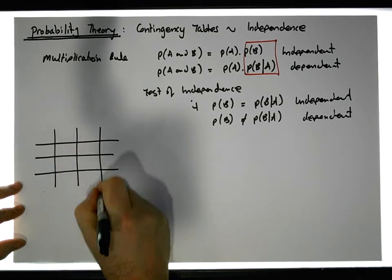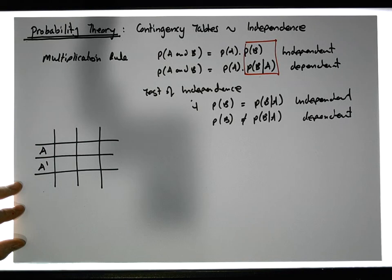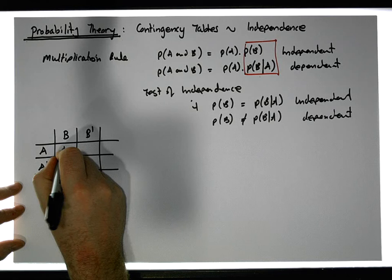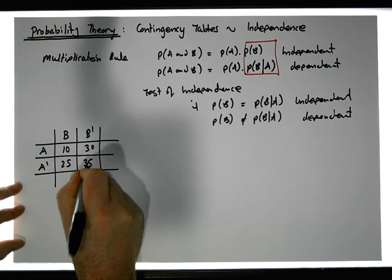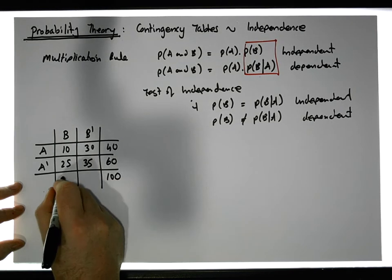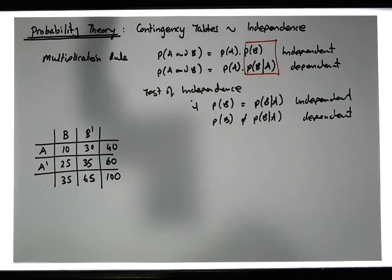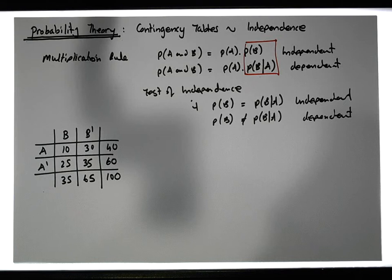Let's say we have product A and 'do not purchase product A', and product B and 'do not purchase product B'. The contingency table has values: 10, 30, 25, and 45, with row and column totals of 40, 60, and 100, and 35 and 65. I took this contingency table from 'Business Statistics' by Berenson and Levine.